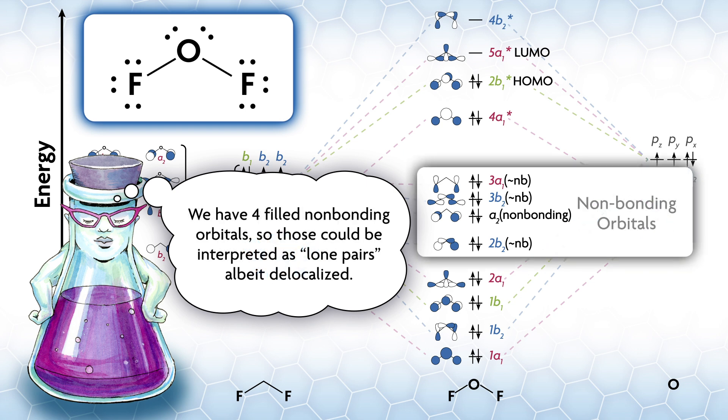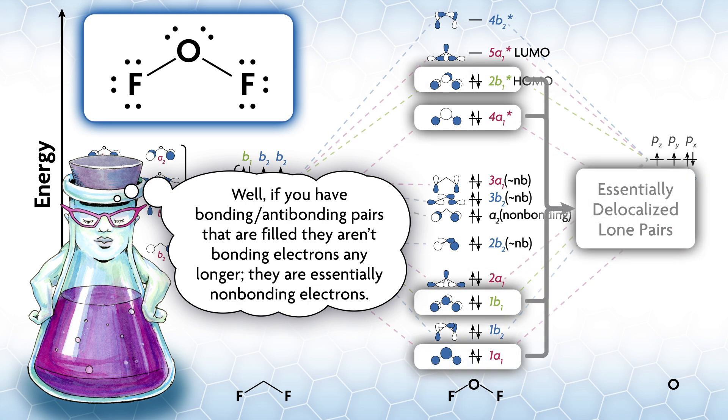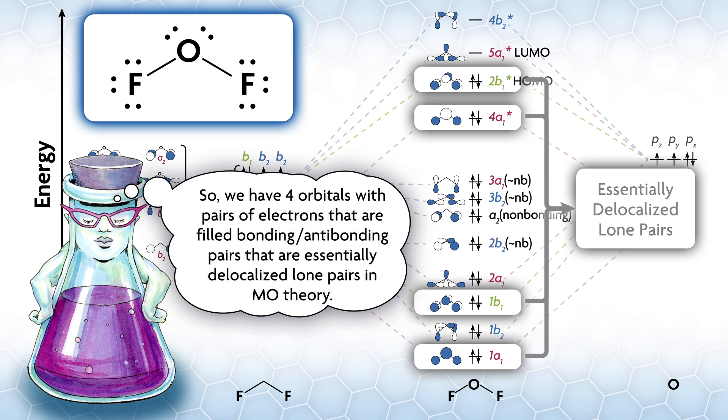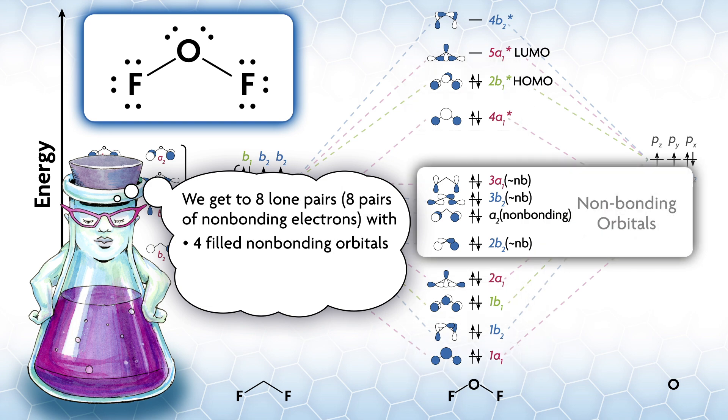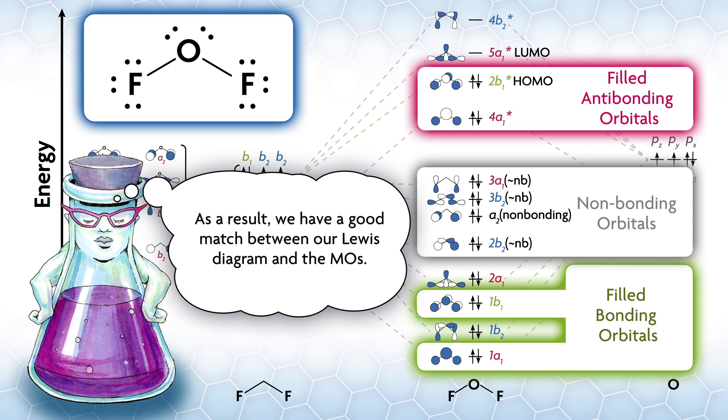What about the lone pairs? We have four filled non-bonding orbitals, so those could be interpreted as lone pairs, albeit delocalized. However, there should be eight lone pairs. Well, if you have bonding-antibonding pairs that are filled, they aren't bonding electrons any longer. They are essentially non-bonding electrons. So we have four orbitals with pairs of electrons that are filled bonding-antibonding pairs that are essentially delocalized lone pairs in MO theory. We get to eight lone pairs, eight pairs of non-bonding electrons with four filled non-bonding orbitals, two filled bonding orbitals, and two filled antibonding orbitals.